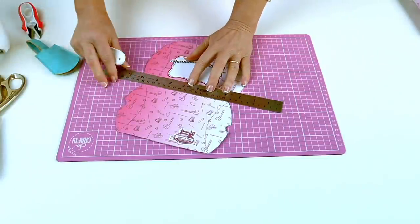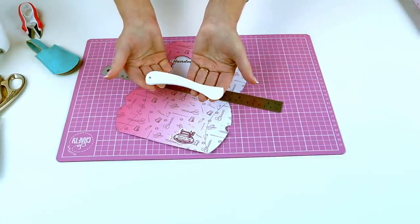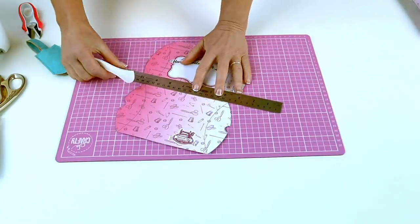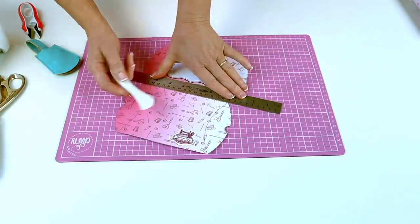Grab a ruler and a bone folder or something similar. You can use the edge of your scissors if you prefer. I have this little tool—if you've done card making and things before, or even for marking fabric, those are great. We're just going to score along each of those dotted lines.